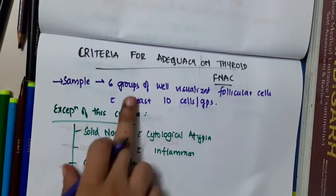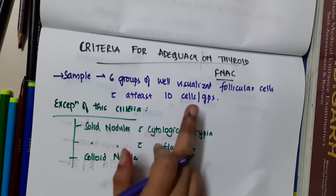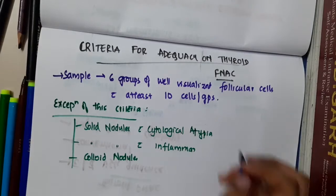Adequacy of thyroid criteria: there should be 6 groups of well visualized follicular cells, with at least 10 cells per group.